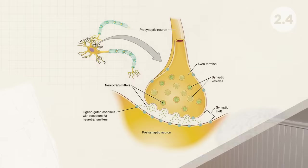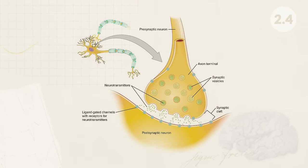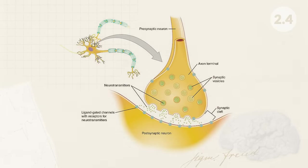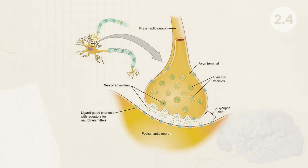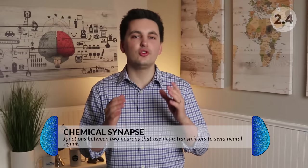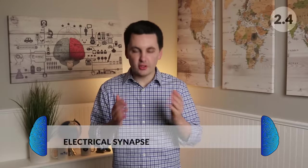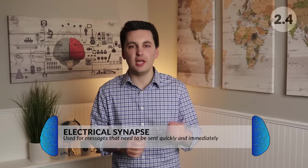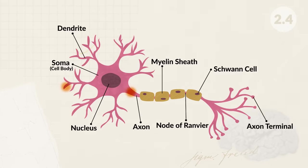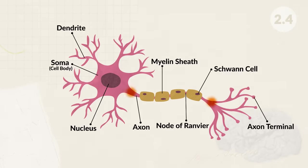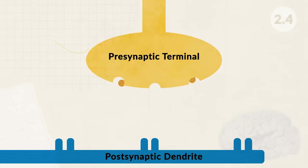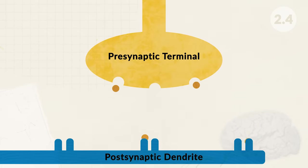Once the signal makes its way down the axon of a neuron, it's sent to the axon terminal, where the signal is converted and sent to another neuron through a small pocket of space between the axon terminal of one neuron and the dendrite of another — this tiny space is known as the synapse. There are chemical synapses and electrical synapses. Chemical synapses use neurotransmitters, which are chemical messengers that send messages through the nervous system, while electrical synapses are for messages that need to be sent quickly and immediately. When neurotransmitters are sent, they diffuse through the synaptic gap — a narrow space between the pre-synaptic terminal of one neuron and the post-synaptic terminal of another.